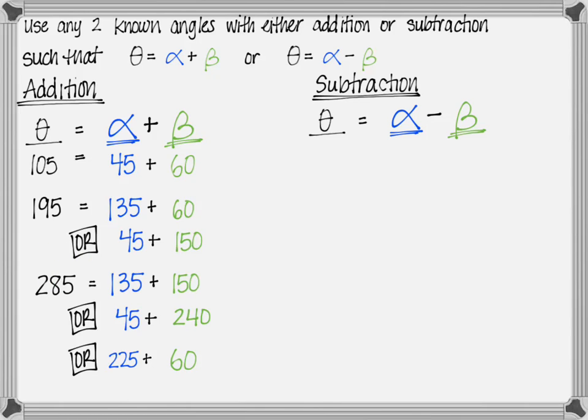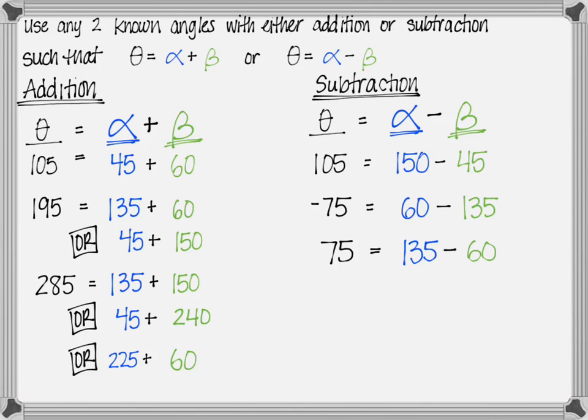Let's look also at subtraction. Well, with subtraction, we're going to start with 105 again, and just think about what two known angles, and you do 150 minus 45. For negative 75, it would be 60 minus 135. If it was positive 75, well, this is understanding subtraction, but all you have to do is switch your subtrahends, these two numbers that you were subtracting, 135 minus 60, and you would get the positive. So now we've explored this idea of finding angle pairs that either add up to equal our theta, so we're using theta equals alpha plus beta, or you subtract them to get your theta.